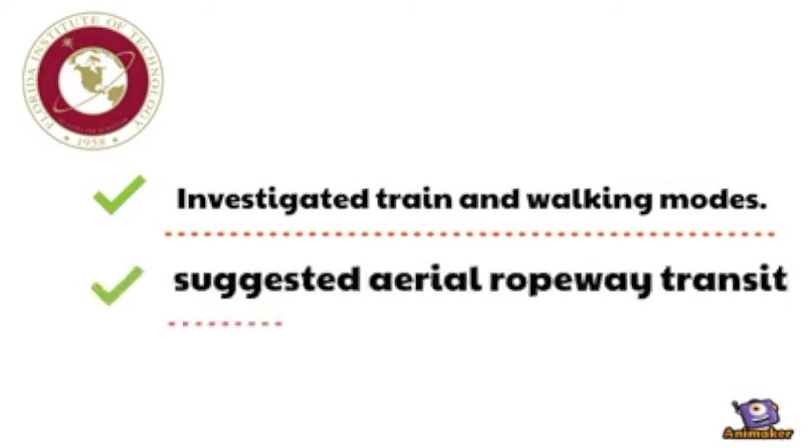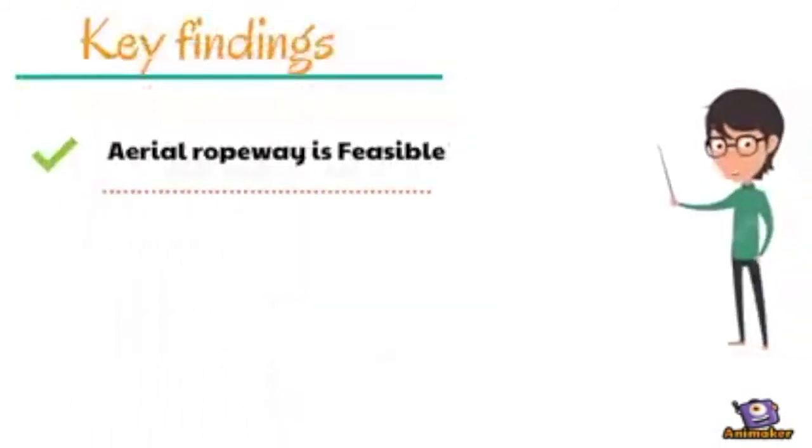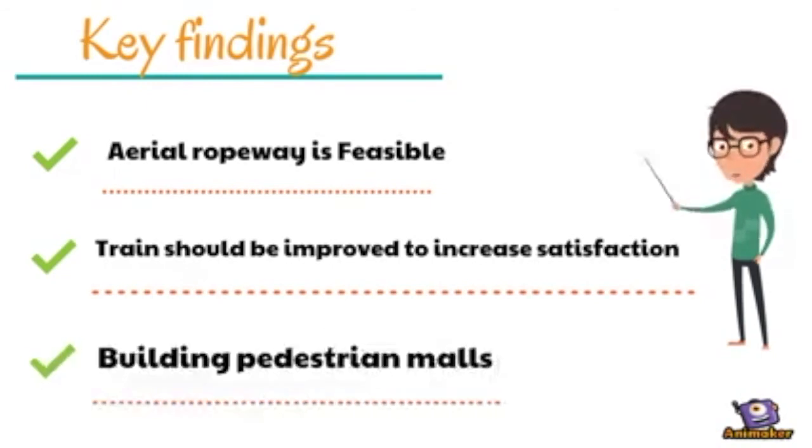Further, I suggested the aerial ropeway transit as one of the solutions. The main findings of this video are: the aerial ropeway transportation mode is feasible in Makkah, Makkah trains should be improved to increase customer satisfaction, and Saudi government could build pedestrian malls and separate pedestrian from cars lane to solve the pedestrian problem.